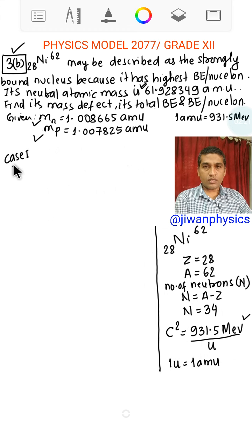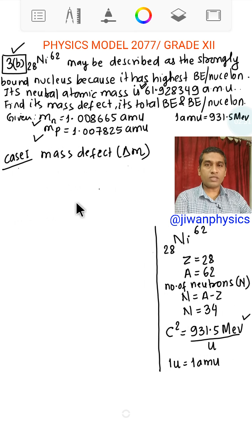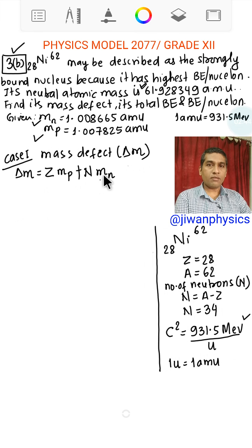Case 1, mass defect. It is denoted by symbol delta M and delta M equals Z Mp plus N Mn minus mass of nucleus.